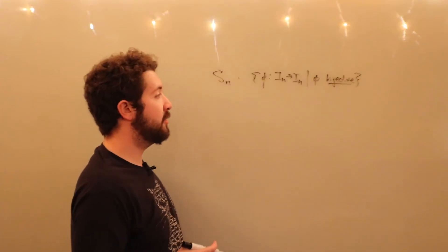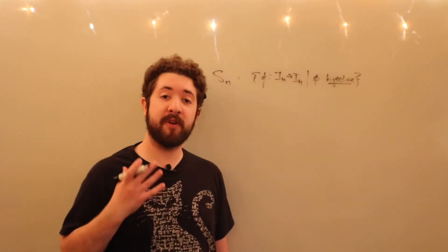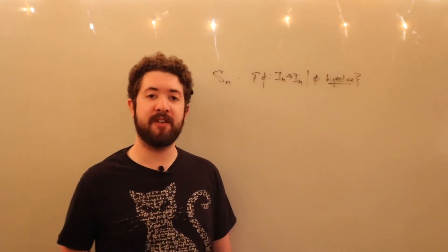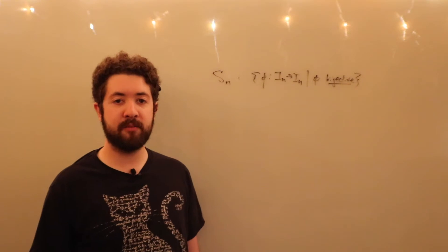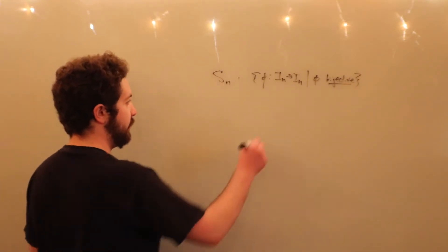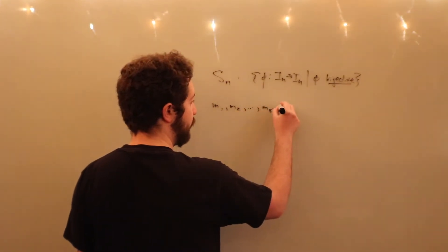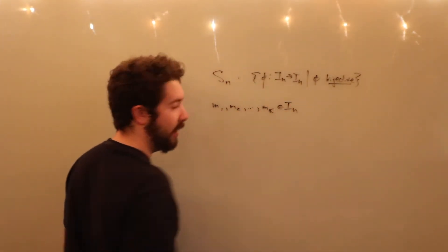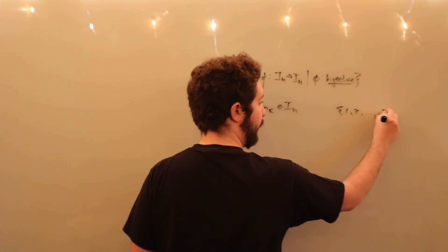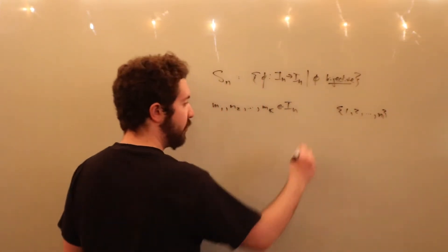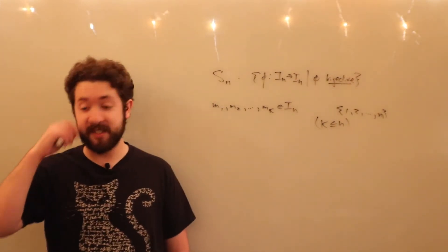Being one-to-one and onto, the elements of this group are all bijections, or what we have previously called permutations. Now, some new notation. Let m1, m2, all the way up to mk be elements of I sub n — that is, let them be in the set {1, 2, ..., n} with k being less than or equal to n. Otherwise, that would be nonsensical.